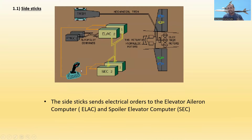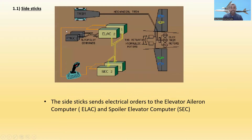1.1 — sidesticks. As mentioned in previous videos, I described how the sidestick operates and what are the parts inside it. The sidestick sends electrical orders to the Elevator ELAC Computer (ELAC) and Spoiler Elevator Computers (SEC). You can see the amber-colored electrical orders going from the sidestick to ELAC and SEC.